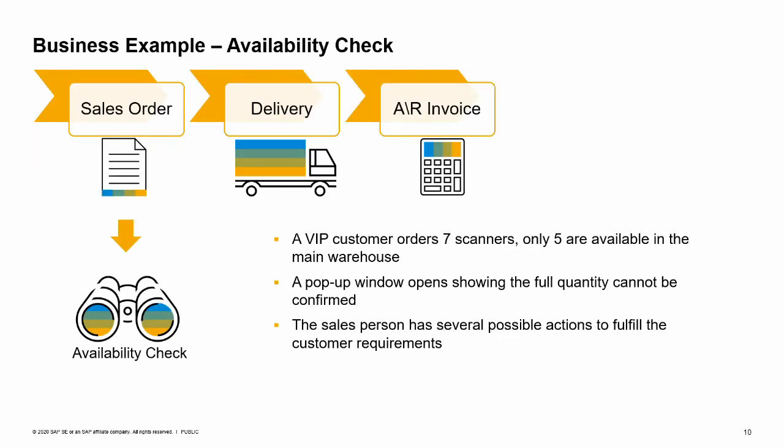Let's look at how availability checking works with a business example. A very important customer orders seven scanners, but unfortunately only five are currently available in the main warehouse. As the salesperson enters the item, a pop-up box appears showing the full quantity cannot be confirmed. The salesperson has choices about what actions he can take to fulfill the customer requirements. We will look at what actions are available for each availability check.